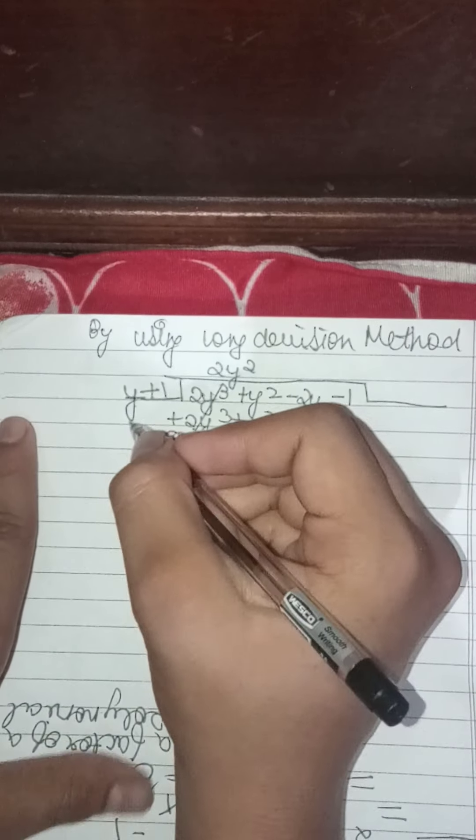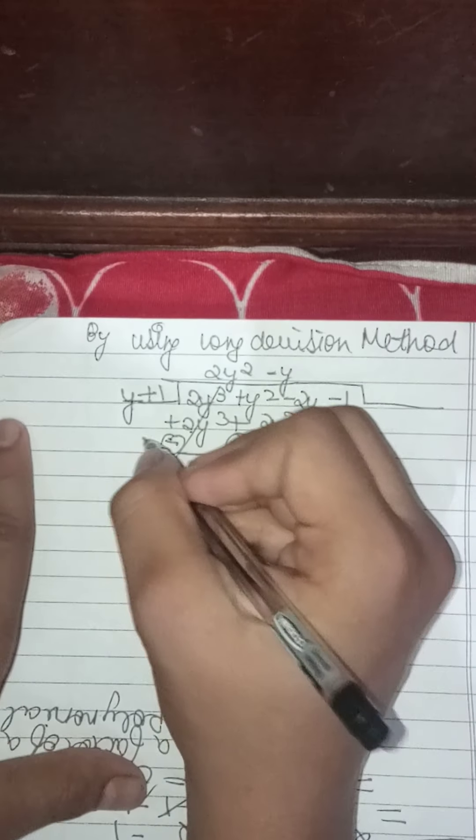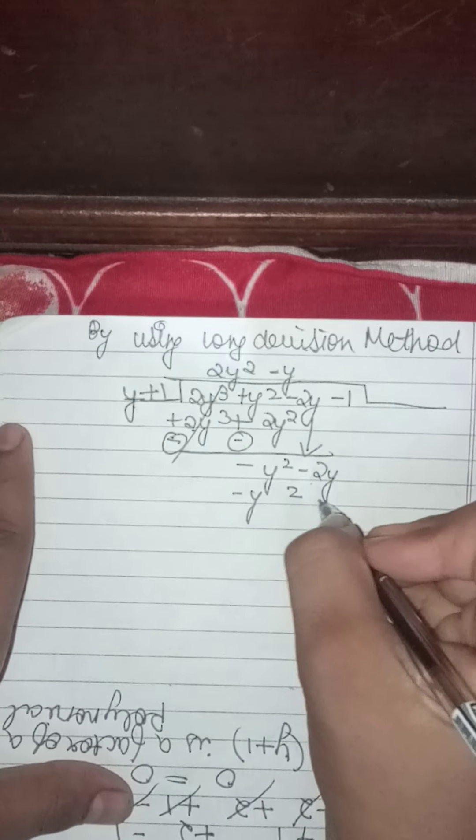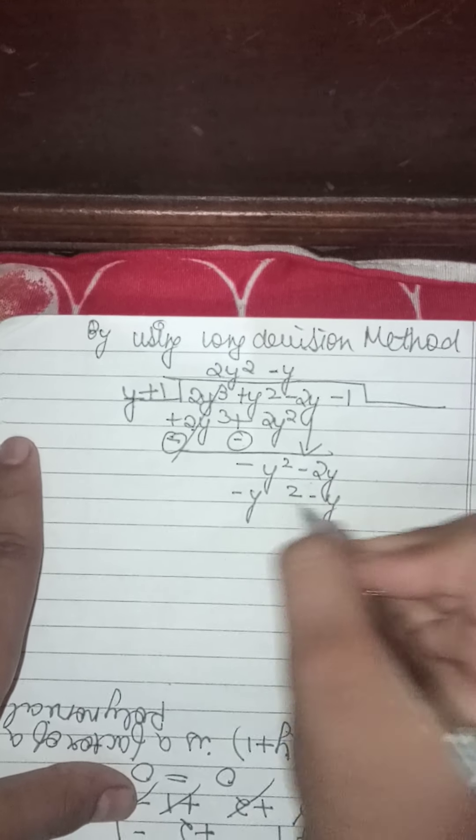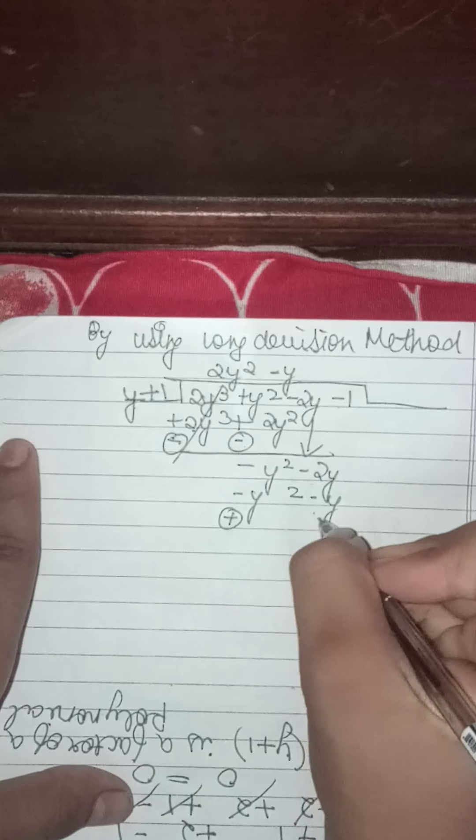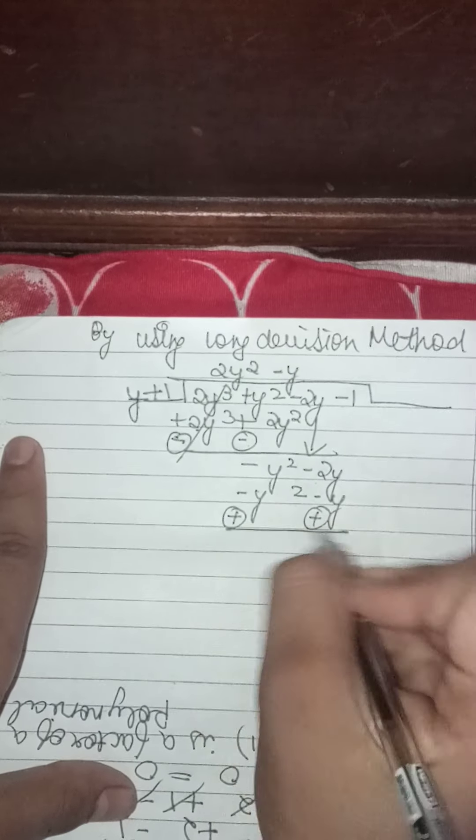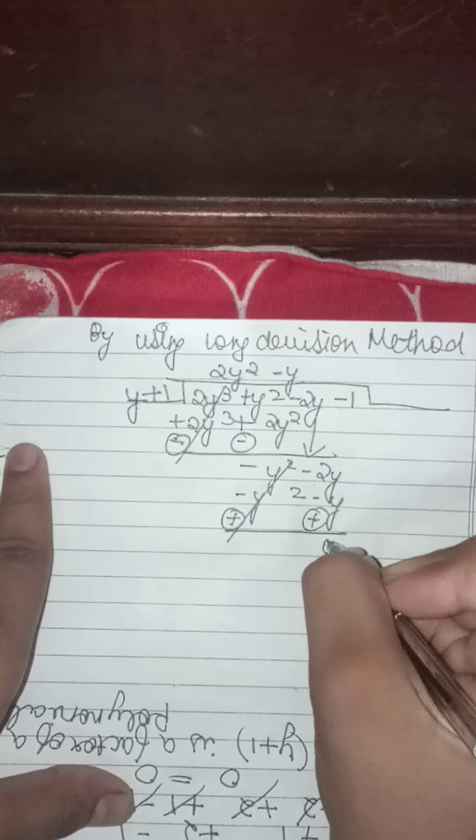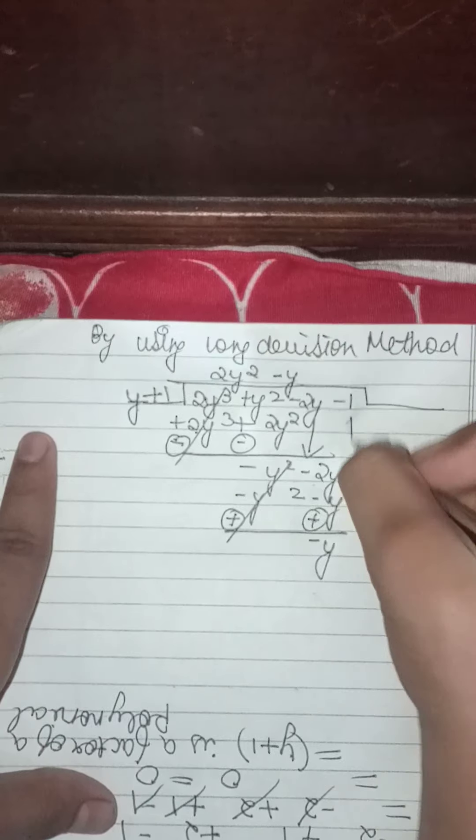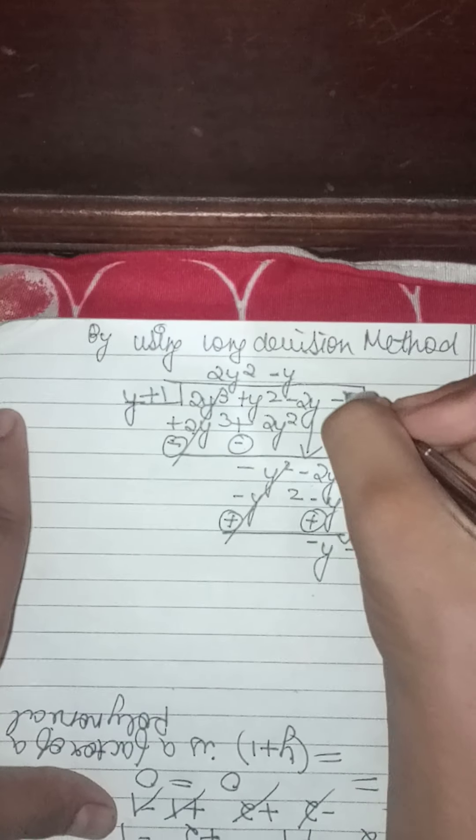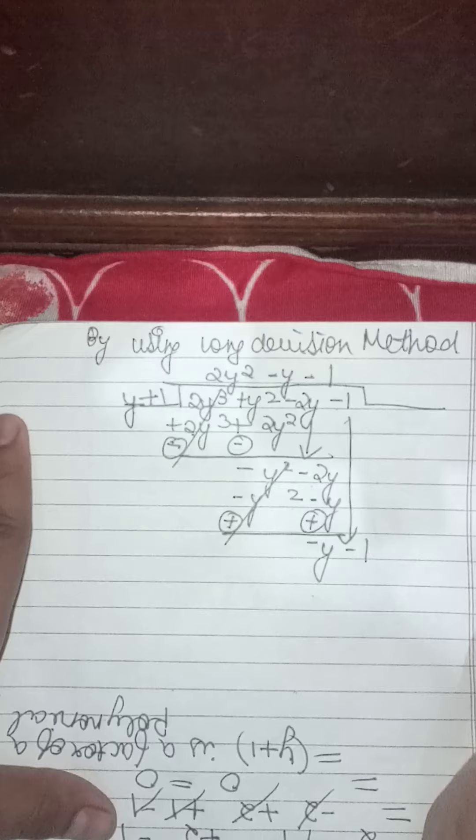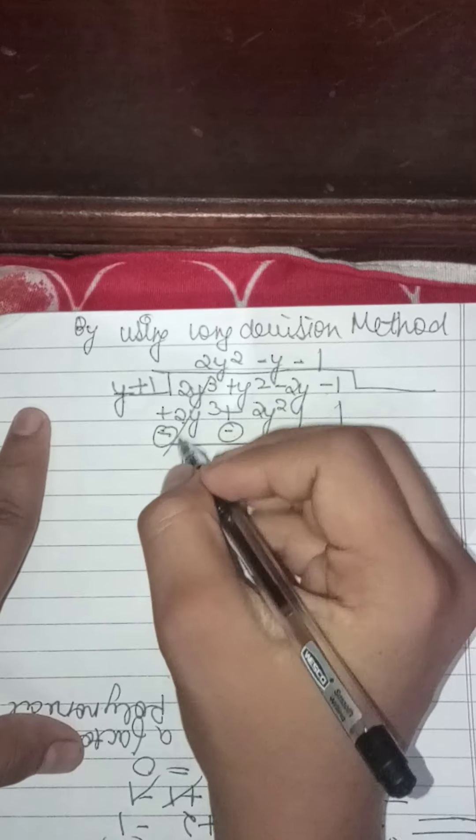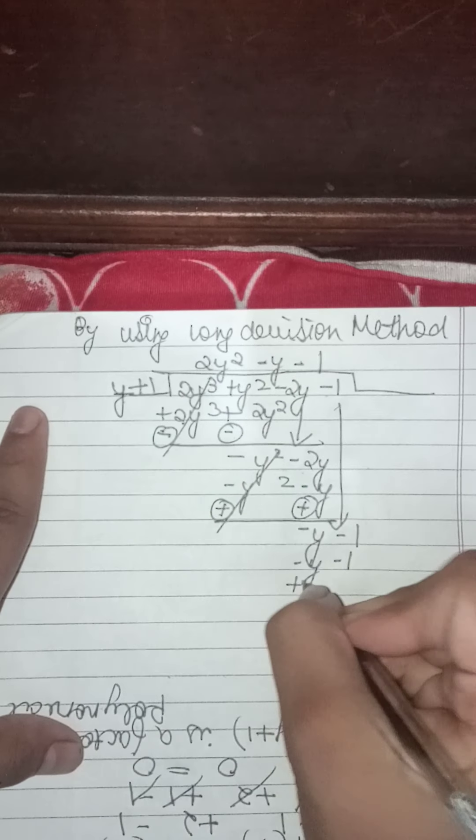Then we will take minus y: y minus y equals minus y square, 1 into minus y equals minus y. Sign will be changed, minus becomes plus, minus becomes plus. Then plus minus cancel, plus minus minus 2 minus 1y, and subtract minus 1. Minus y minus 1, then we will take minus 1, so y minus 1 minus y, 1 minus 1 minus 1, sign will be changed, cancel to 0.